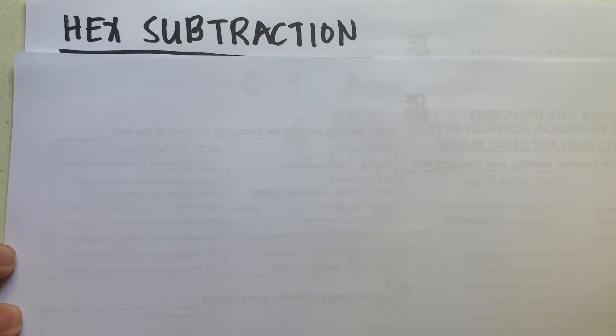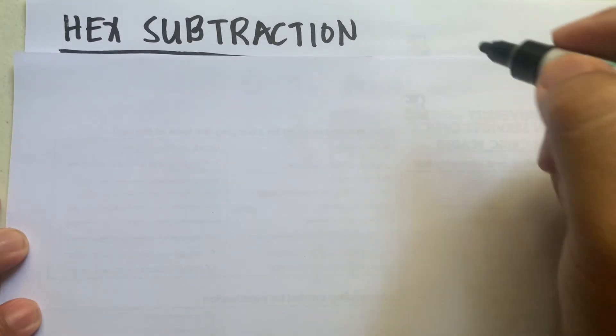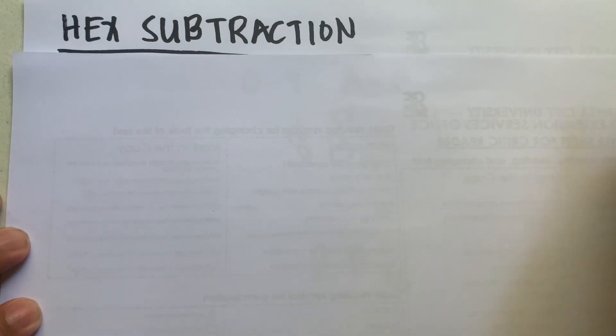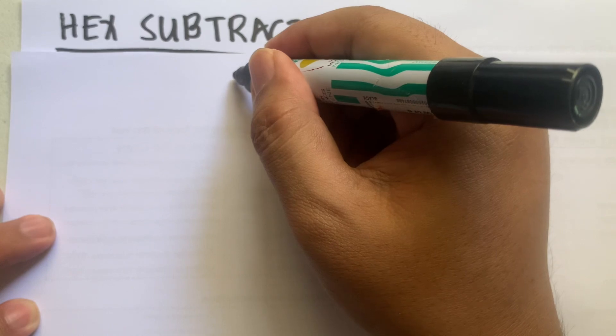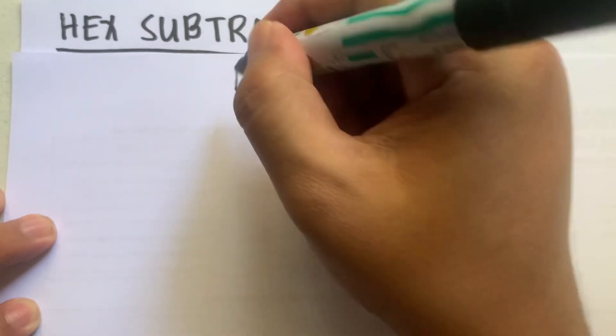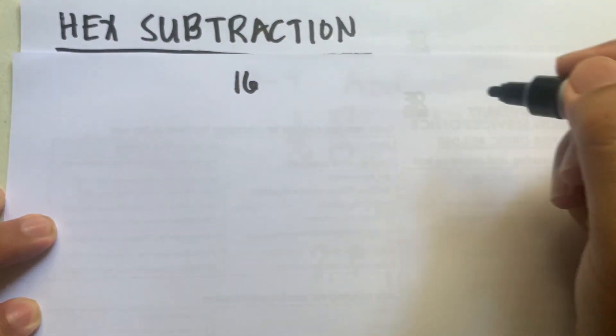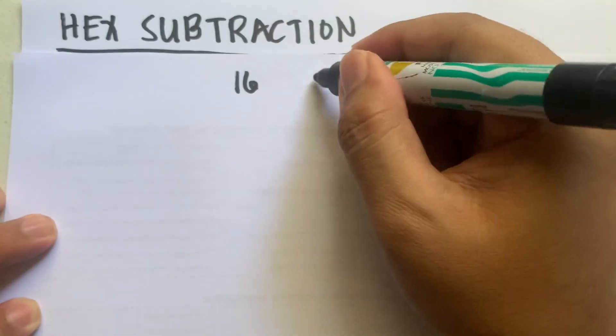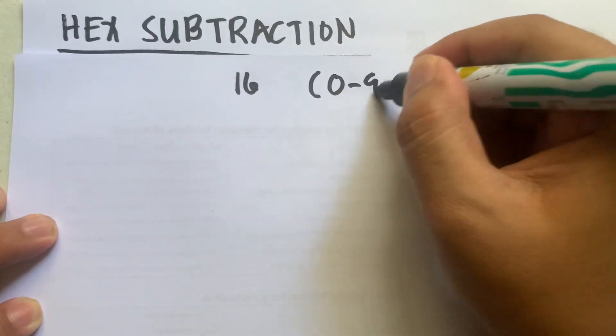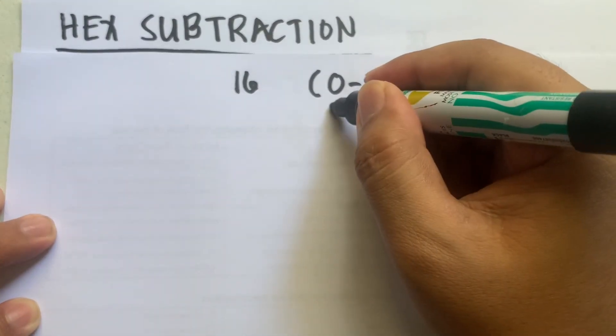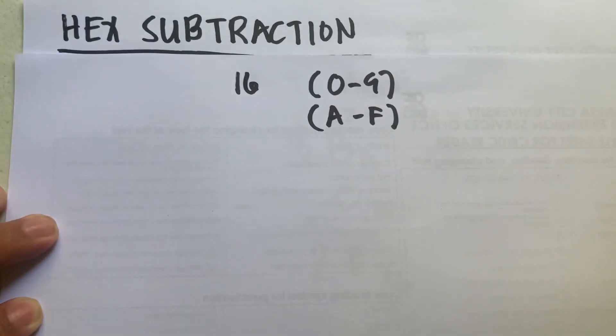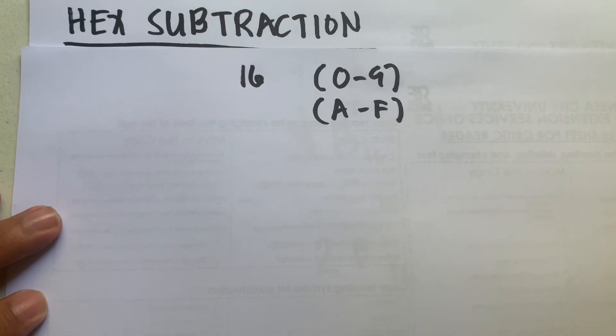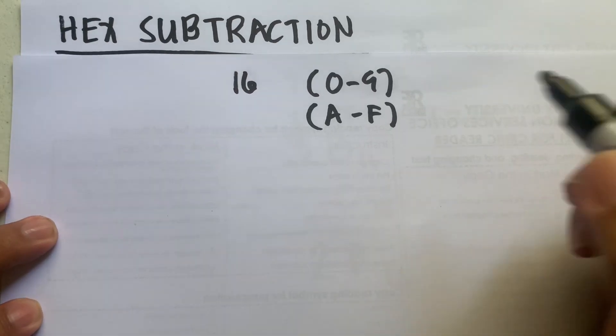Hi guys, in this video I'm going to teach you how to subtract hexadecimal numbers. Hexadecimal numbers are composed of 16 valid symbols: the numbers 0 to 9 and the letters A to F, which represent the numbers 10 to 15. Let's now proceed with hexadecimal subtraction.